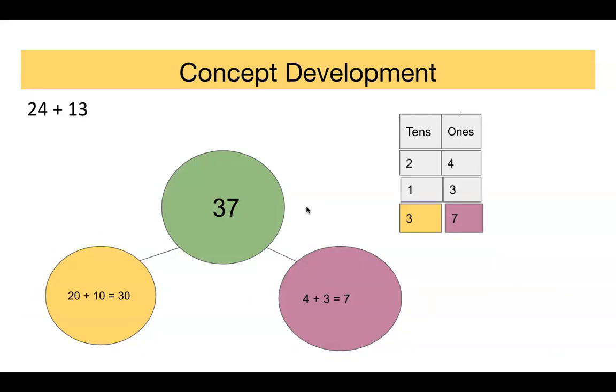Now the next step is to add them together. So we still have our tens here. We had 20 plus 10, which is going to give us 30 or three tens. And we have our four plus our three, which is going to give us our seven. And our answer is going to be 37, three tens and seven ones.